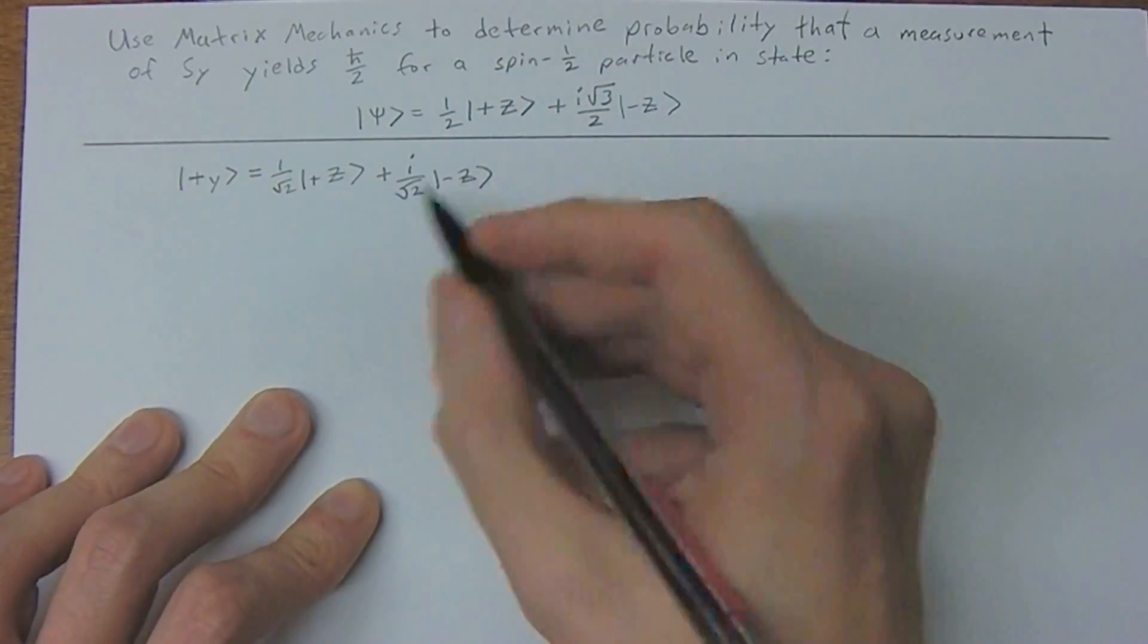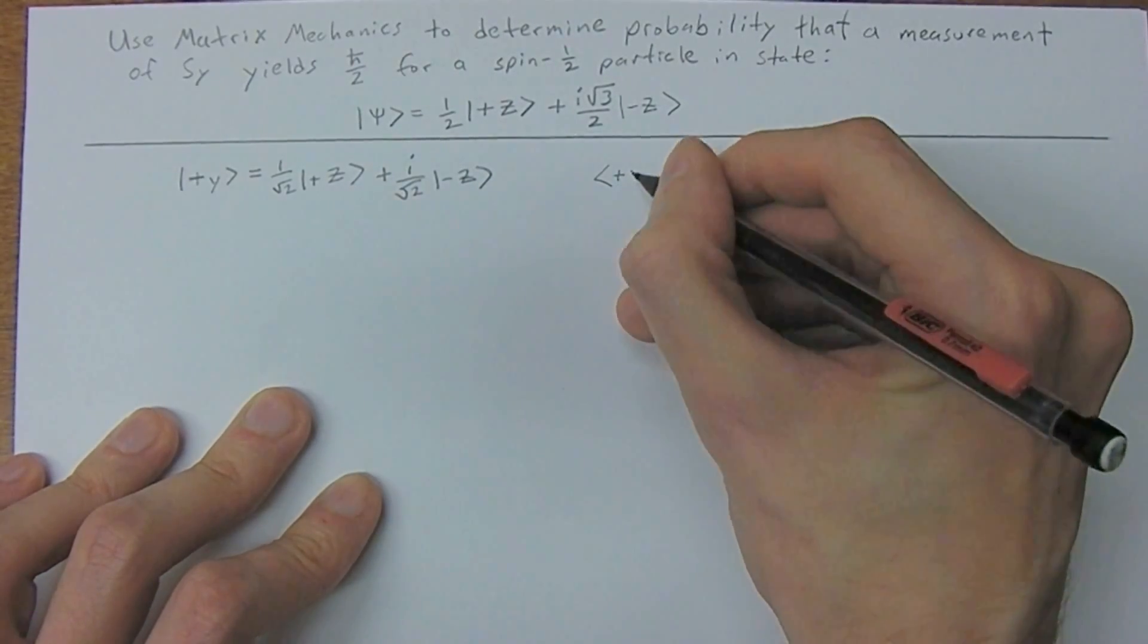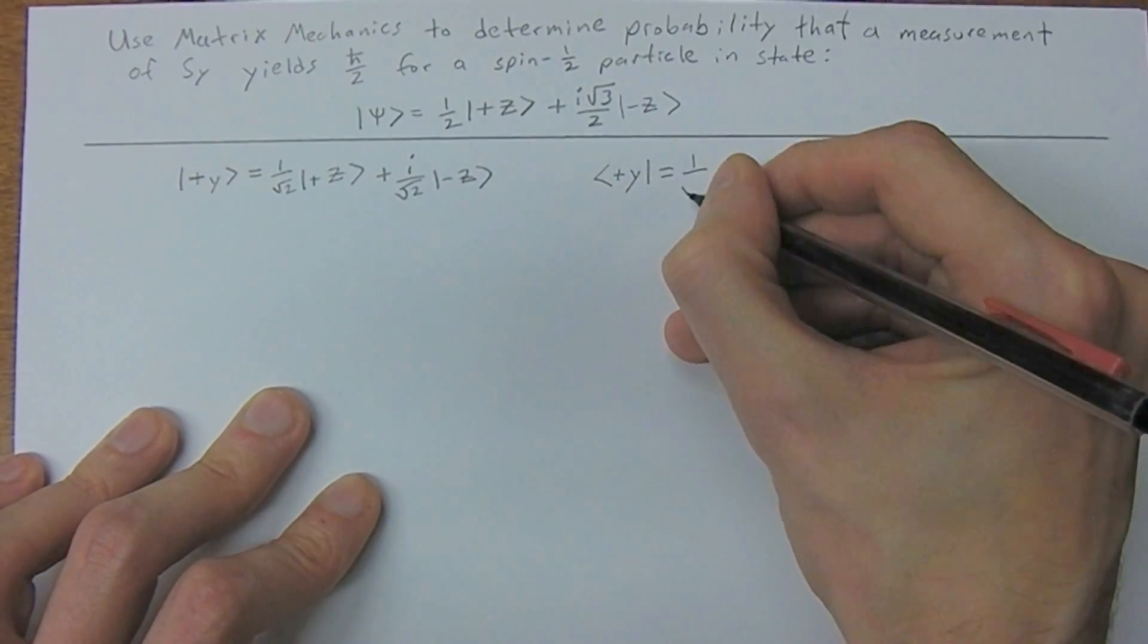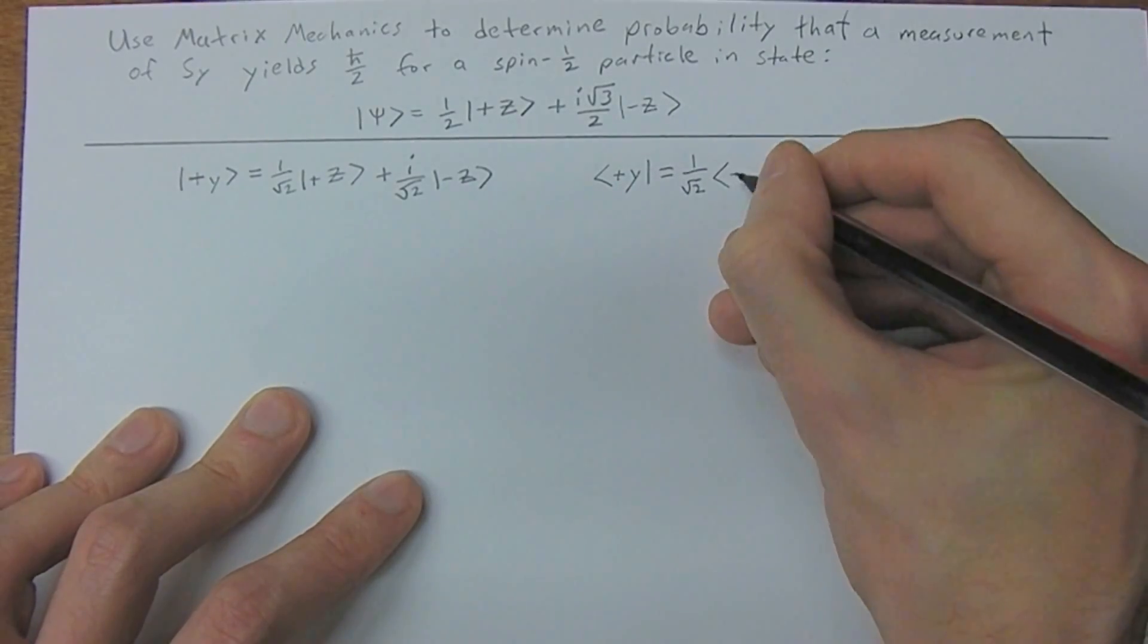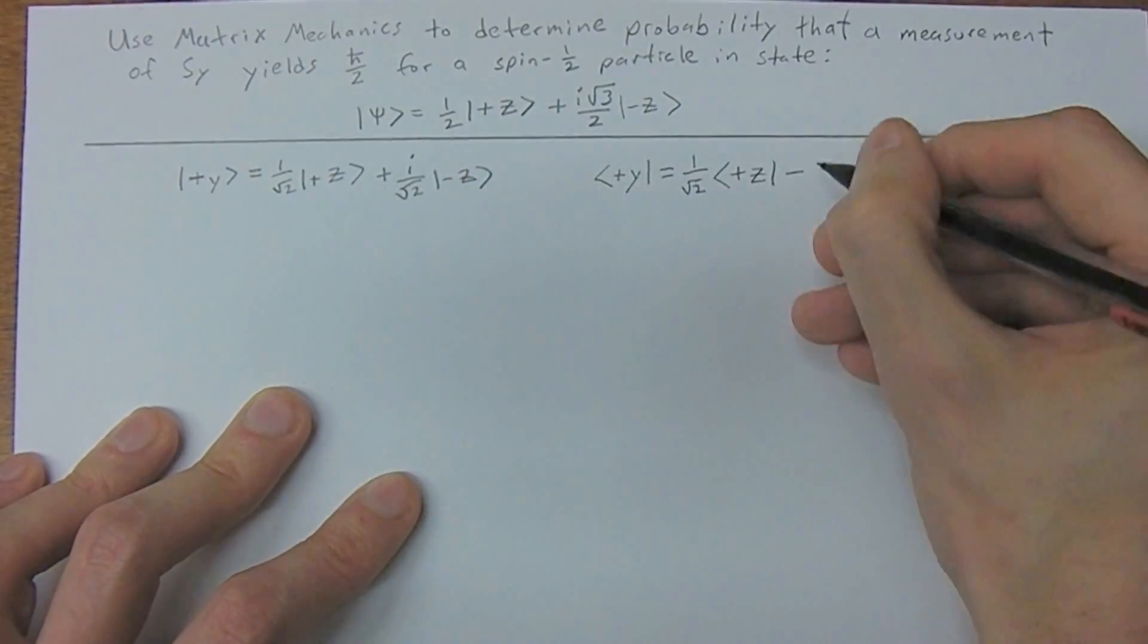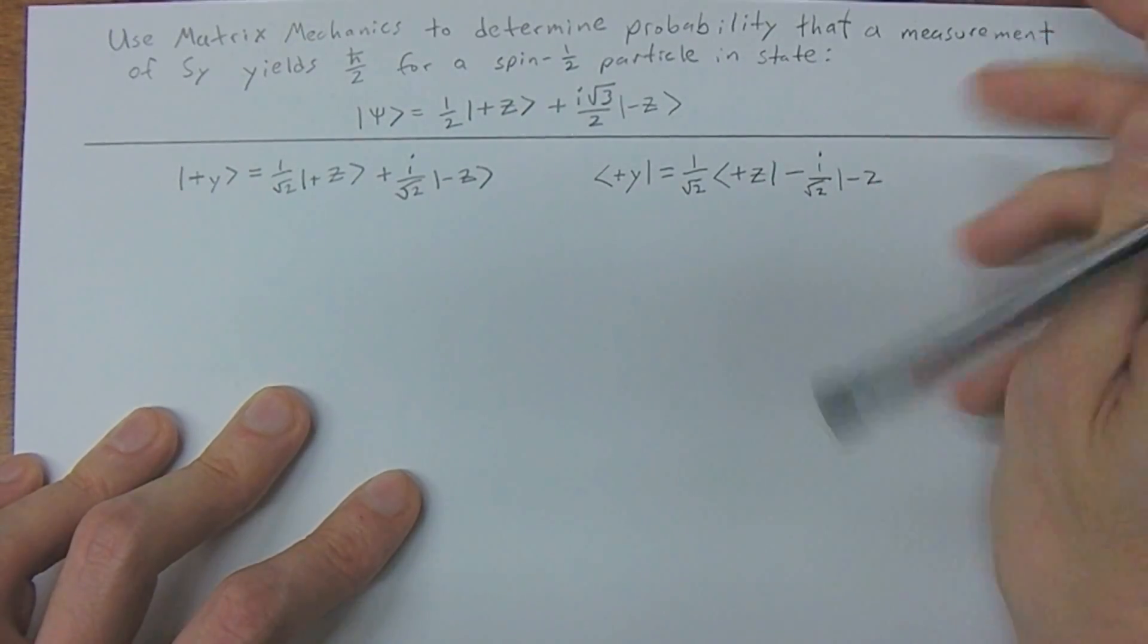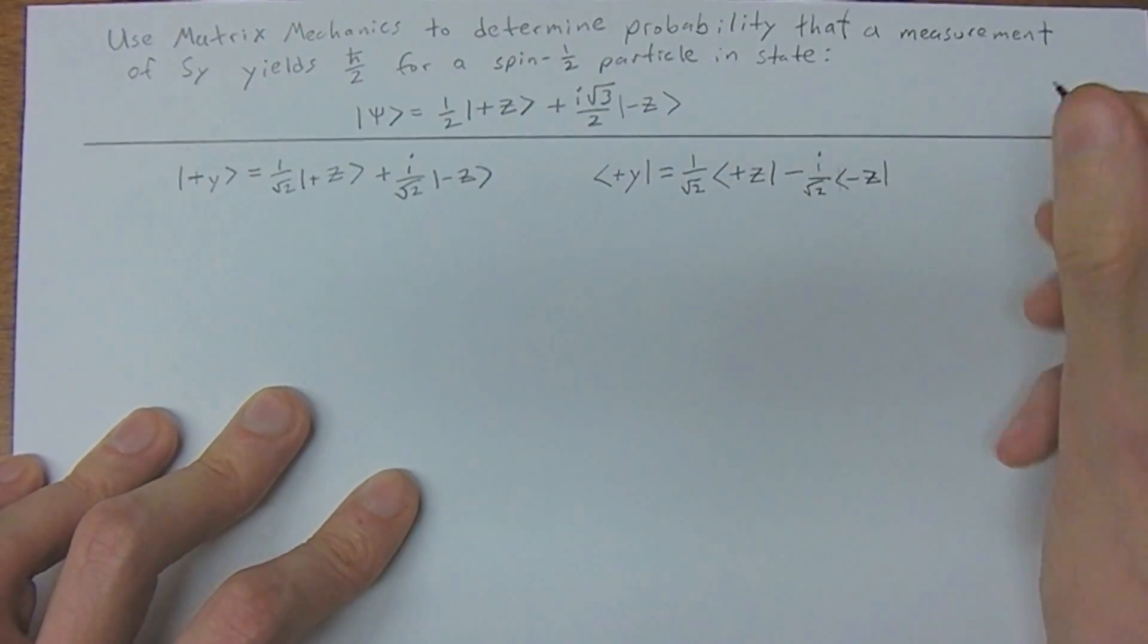And now anytime we have a ket, remember we can convert that to a bra. So here's our ket and here's our bra now. So we just have a complex conjugate of any of the complex terms in front and we switch all our kets over to bras. So complex conjugate, so we just do minus i over square root of 2 bra minus z.